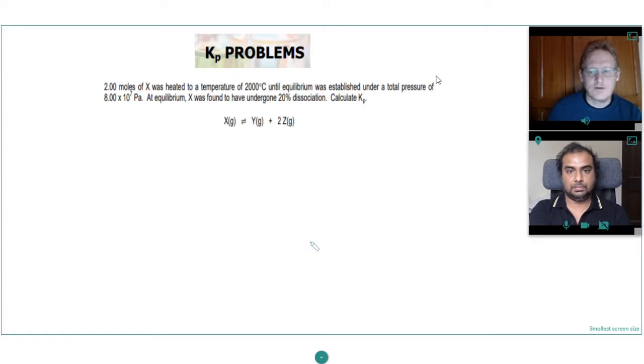Okay so today we're going to look at another Kp equilibrium constant problem and we'll get straight into it. We'll use the ICE method like we've done before: initial, change, and what we've got at equilibrium.